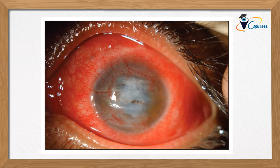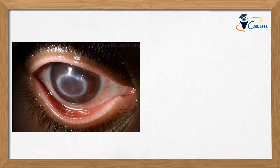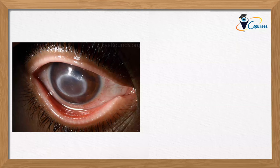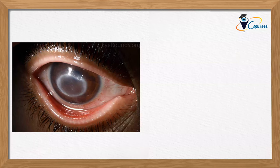Next case: a patient presents with severe pain and history of contact lens use. The picture shows a ring-shaped corneal opacity with the rest of the cornea clear. Differential diagnosis includes acanthamoeba keratitis and bacterial keratitis.